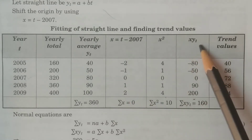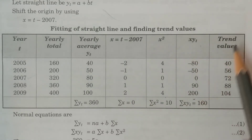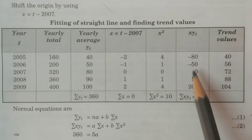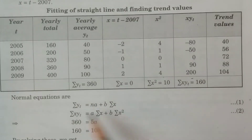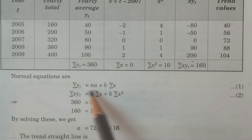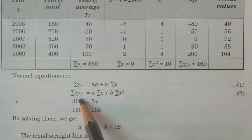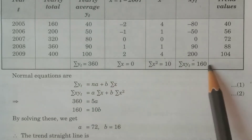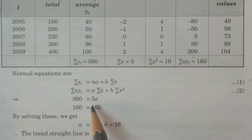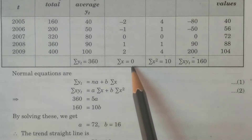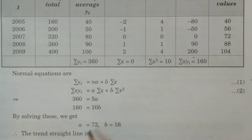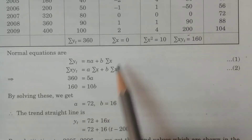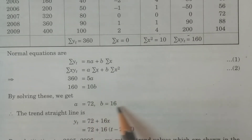The normal equations are: summation y_t equals na plus b times summation x, and summation x times y_t equals a times summation x plus b times summation x-squared. Using these summation values, because summation x equals zero, we directly get the value of a equal to 72 and b equal to 16 by solving these equations.